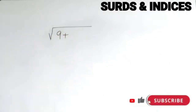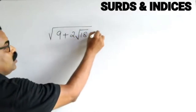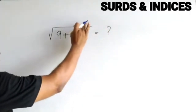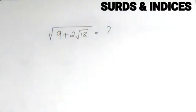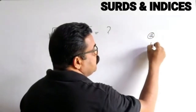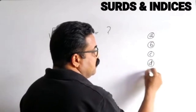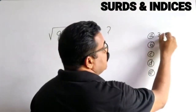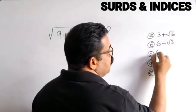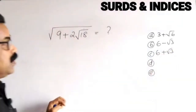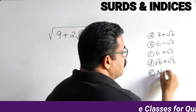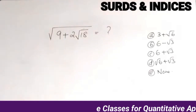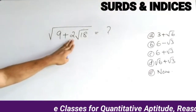The first question is: √(9 + 2√18) is equal to what? So here we have five options given. The options are: 3 + √6, 6 − √3, 6 + √3, √6 + √3, and none of these. We have to solve √(9 + 2√18).